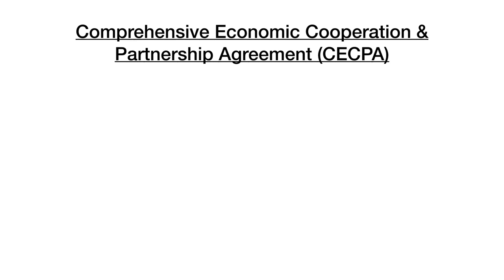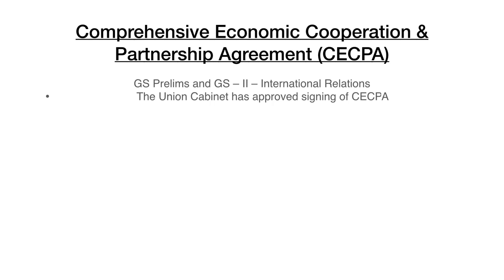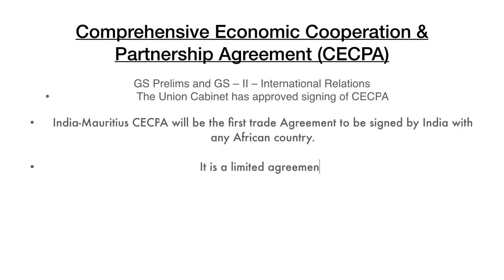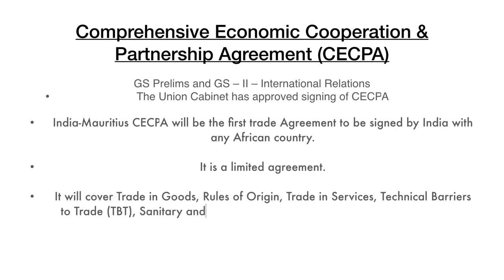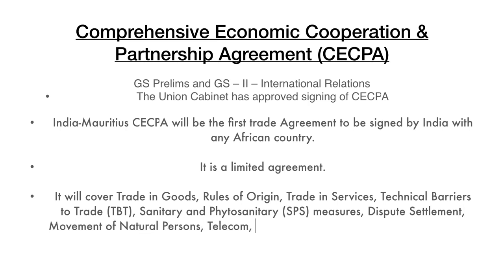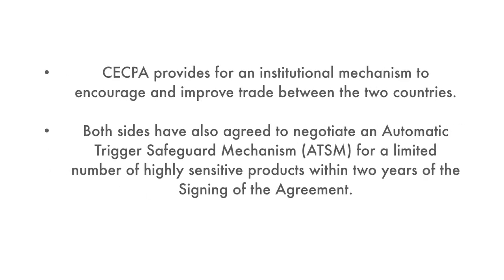The next headline: CECPA — Comprehensive Economic Cooperation and Partnership Agreement — a part of GS Paper 2, International Relations. The Union Cabinet has approved signing of CECPA between India and Mauritius. This will be the first trade agreement between India and Mauritius, and it is a limited agreement. It will cover trade in goods, rules of origin, trade in services, technical barriers to trade, sanitary and phytosanitary measures, dispute settlement, movement of natural persons, telecom, financial services, customs procedures, and cooperation in other areas. Both sides have also agreed to negotiate an Automatic Trigger Safeguard Mechanism (ATSM) for a limited number of highly sensitive products within two years of signing the agreement.